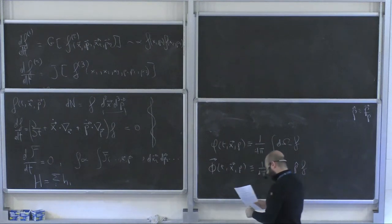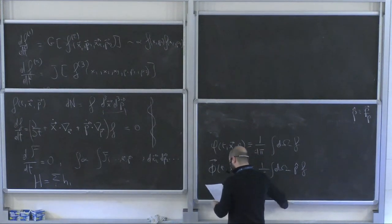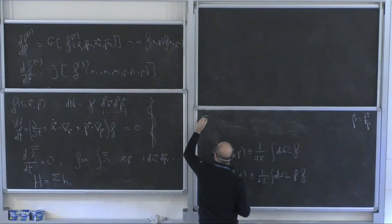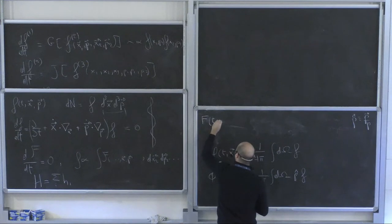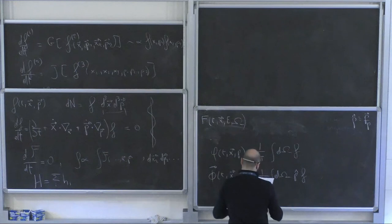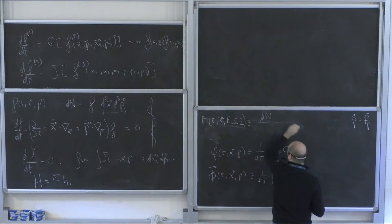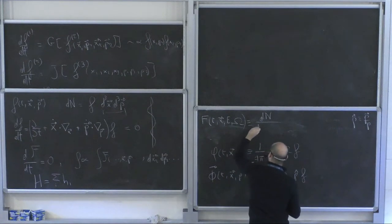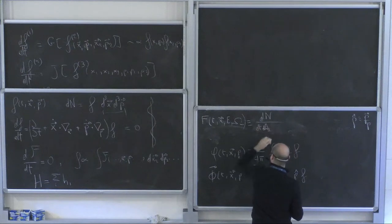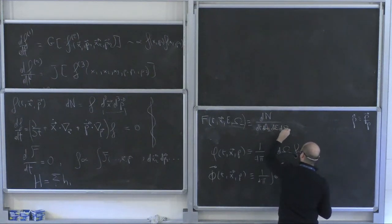The first quantity is called spectral intensity — though not always, there is some ambiguity. It is a function of time, position, energy or modulus of momentum (typically quoted in energy units), and the angular arrival direction Ω. It is defined as the number of cosmic rays per unit time, per unit area orthogonal to some defined direction, per unit energy, per solid angle.